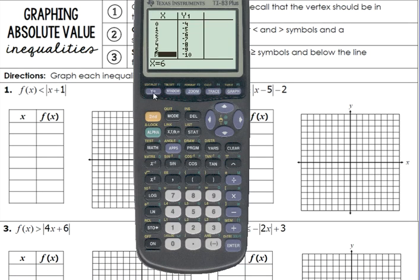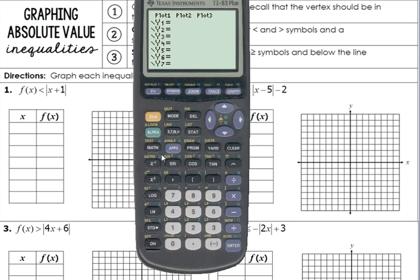So grab your calculator. Let's put the absolute value of x plus 1. Absolute value of x plus 1. Put that in your y equals. Now before we hit graph to close it up. Before we hit graph, have you ever noticed over here on the very left, these slash lines?